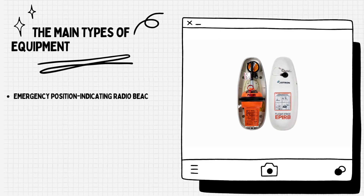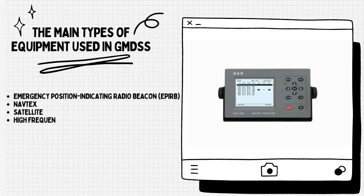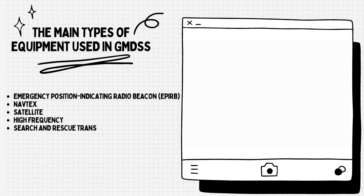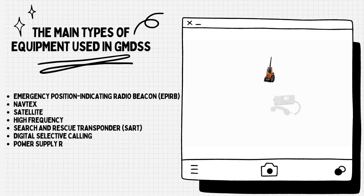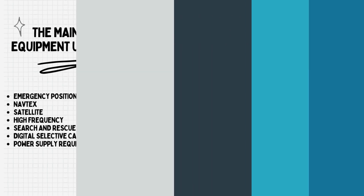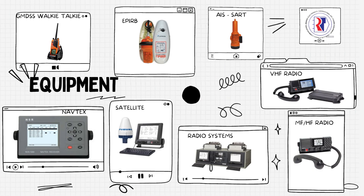The main types of equipment used in GMDSS are: Emergency Position Indicating Radio Beacon (EPIRB), NAVTEX, Satellite, High Frequency, Search and Rescue Transponder (SART), Digital Selective Calling, and Power Supply Requirements. These are the equipment that apply for GMDSS.